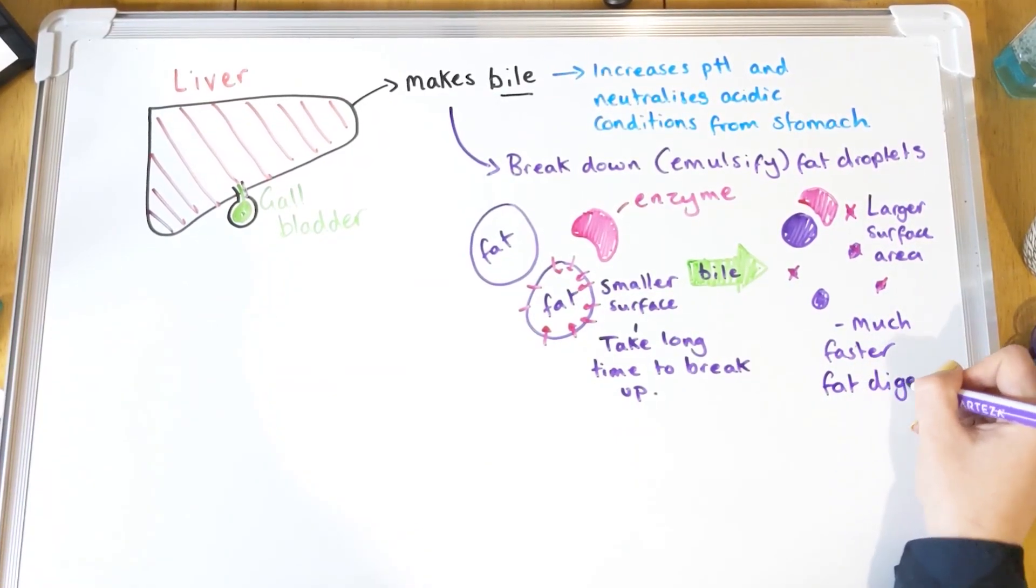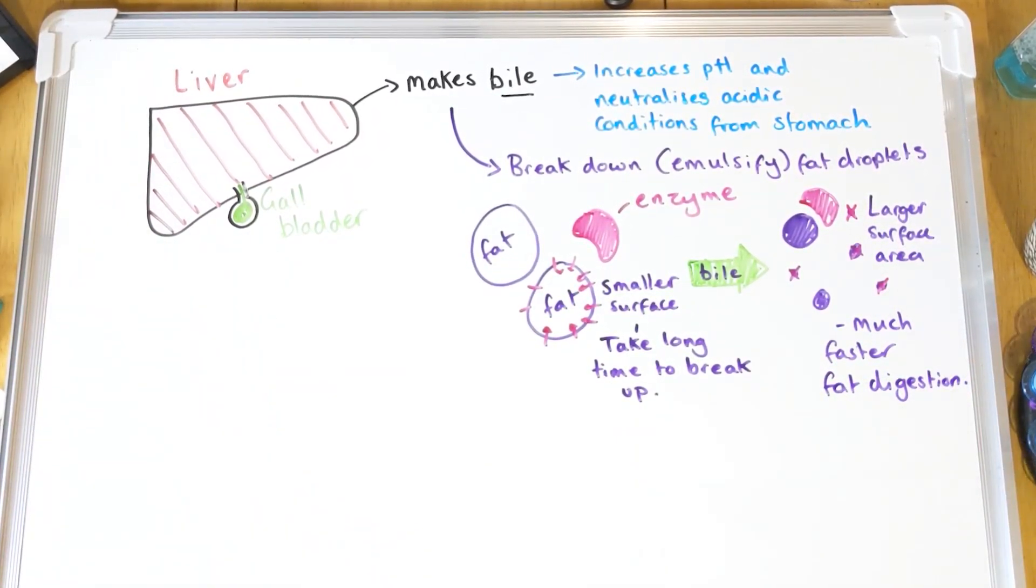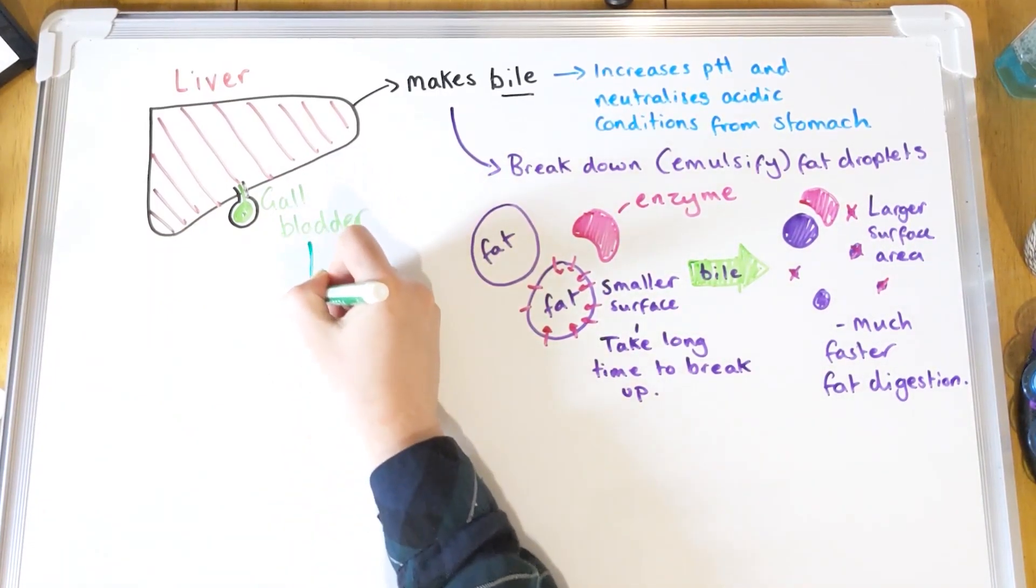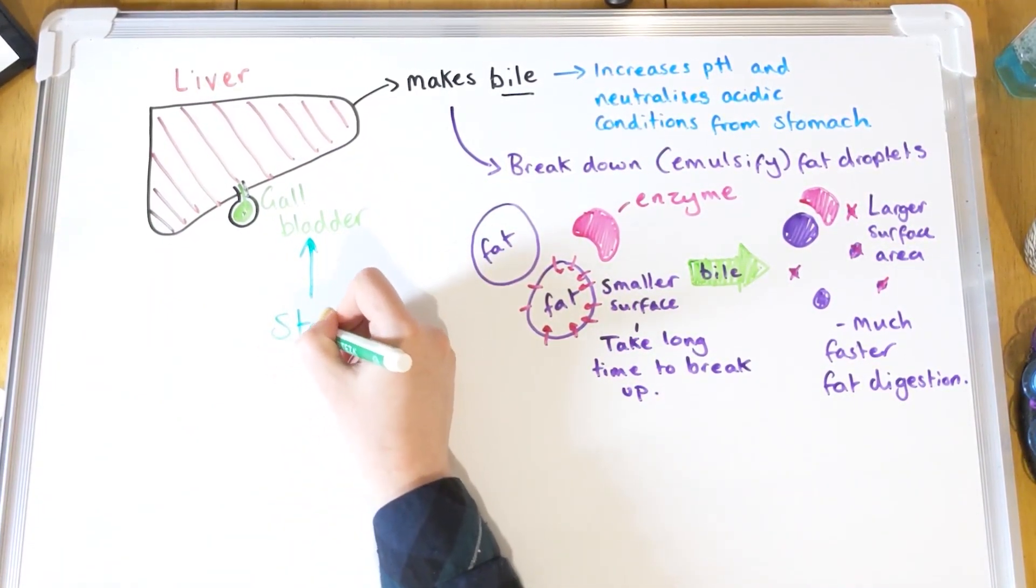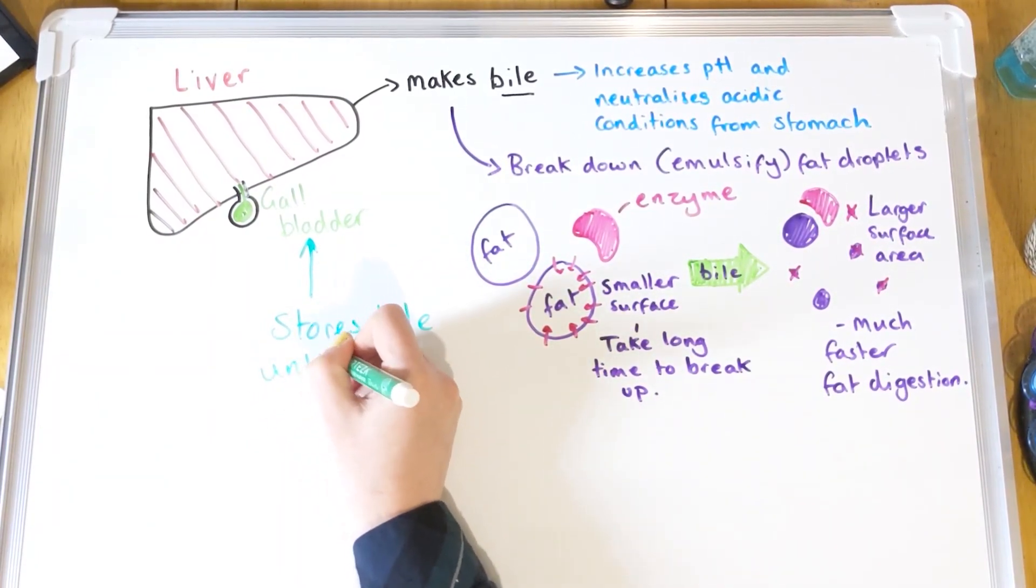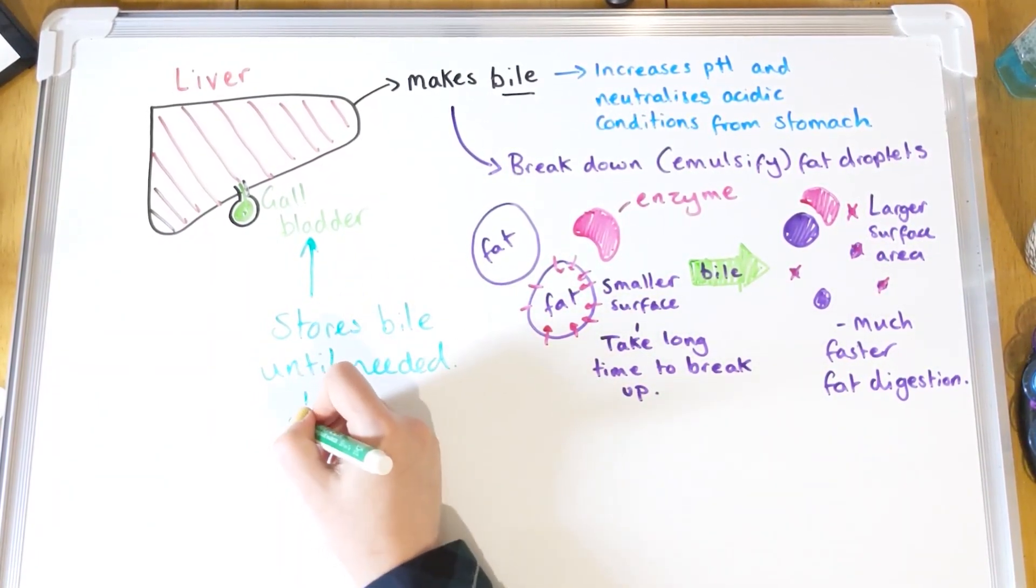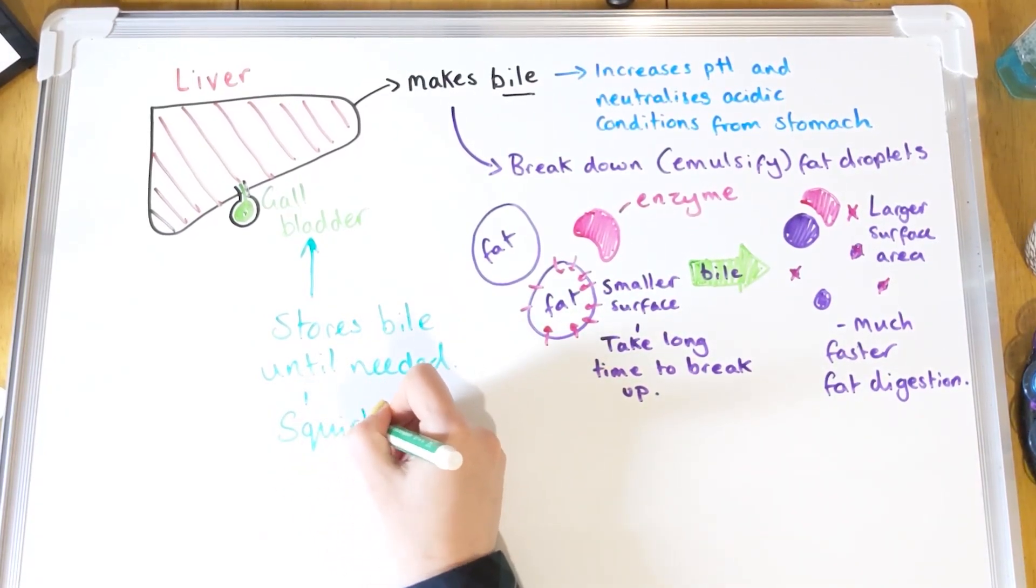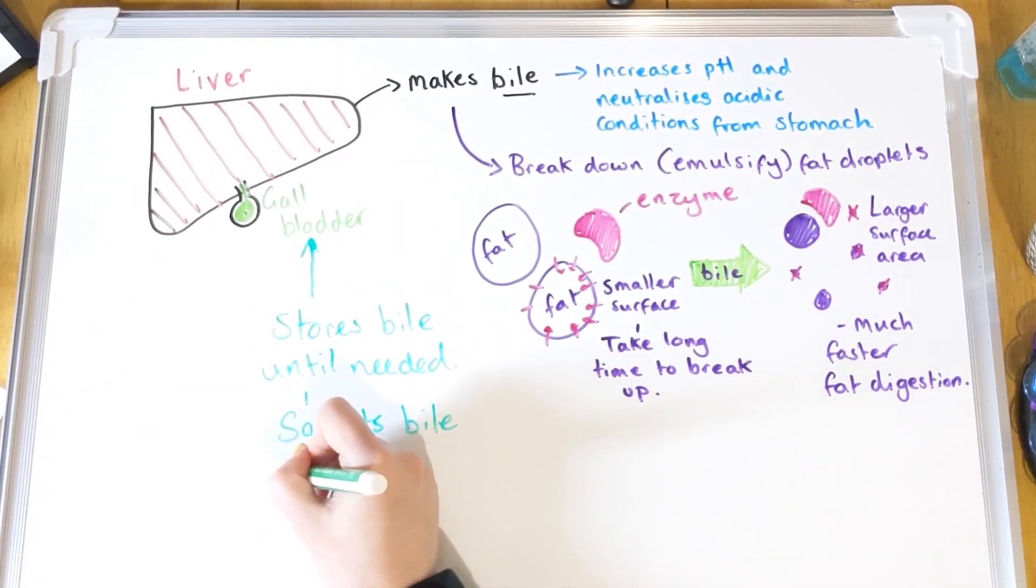Your gallbladder, which is that little green bit on the bottom of the liver, doesn't actually make its own stuff. It stores bile that's made by the liver, because you don't need it all the time. You only need it when your small intestine is in use. So when it's needed, when food is moving down from your stomach, the bile will be squirted out into the small intestine via the gallbladder.